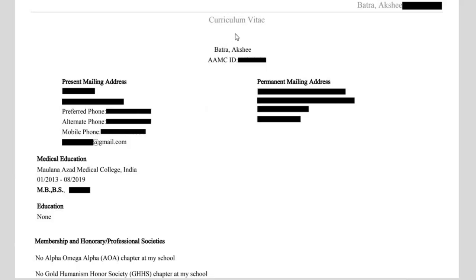So here we go. This is my ERAS application and I think this is the application that is sent to the programs as well. As you can see, my name and then the USMLE ID, and after that there is a column with present mailing address and permanent mailing address. I wrote my permanent Indian address here, and for the present mailing address I used the address of one of my relatives living in New York.